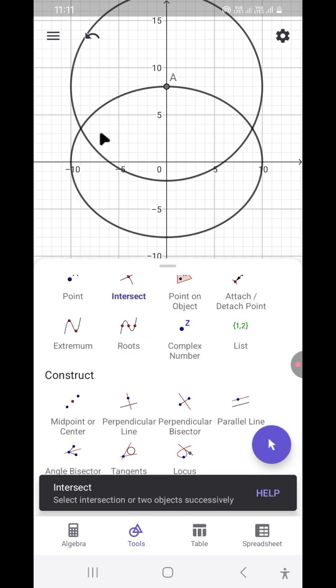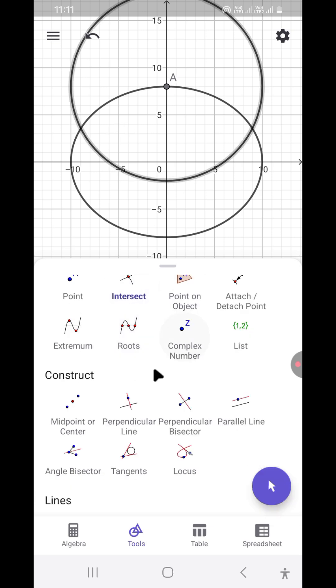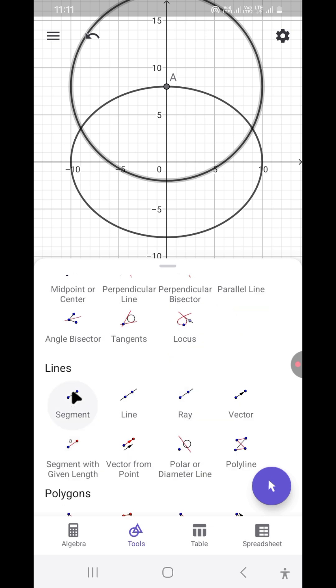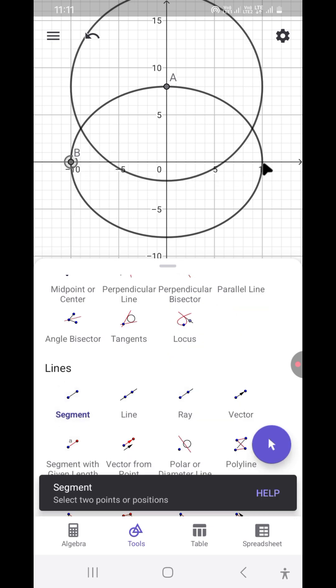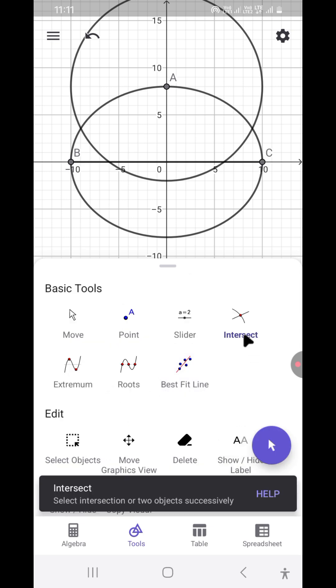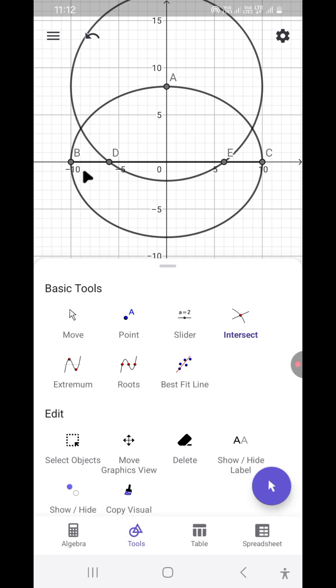Then let us first draw the line, the major axis. So wherever these two intersect, so this d and e, these are the foci of the ellipse.